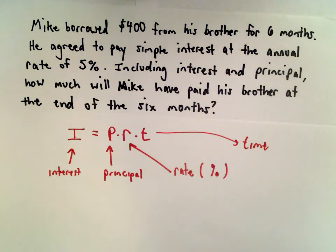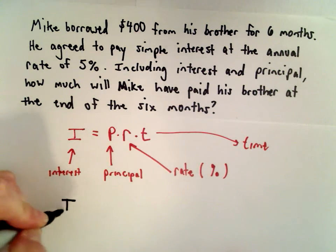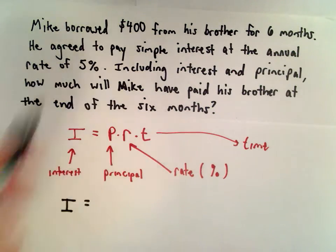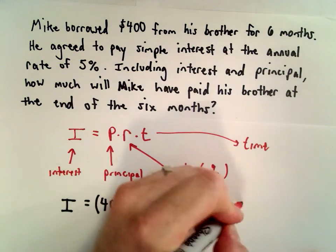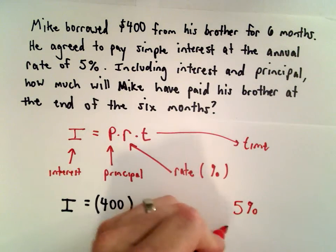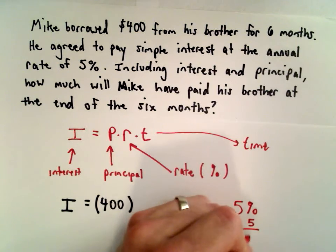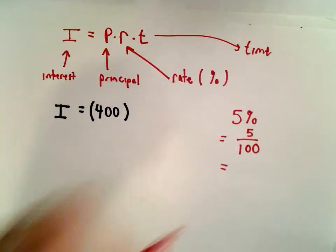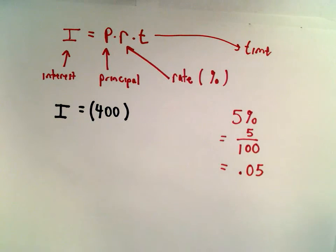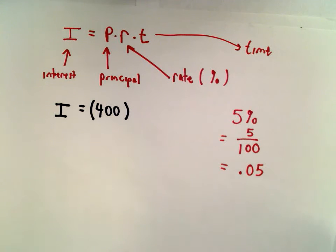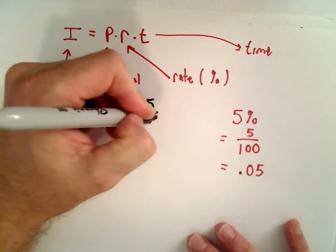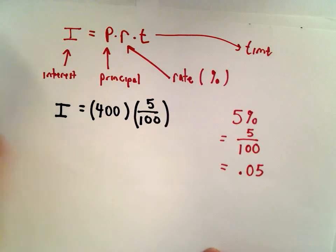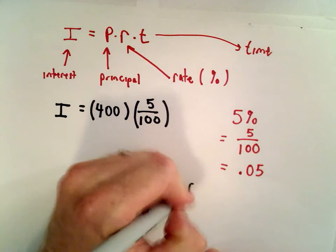In this case, interest is what we're trying to determine. The principal, the amount he borrows, is $400. The rate is 5%, which we can write as a fraction 5/100 or as a decimal 0.05. I'm going to use the fraction form. T is time measured in years, so six months is 1/2 of a year.